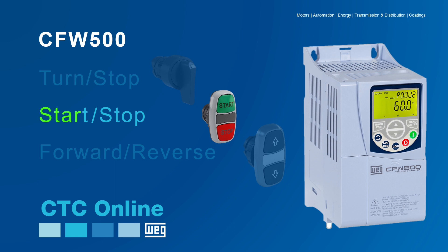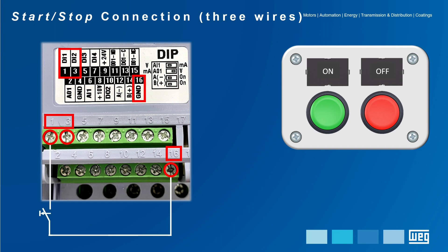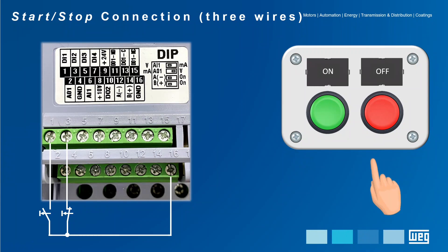The next command is the START STOP with three-wire connections. That setup uses a pulsating button where you can start and stop the motor without the need for an external contact for circuit interlock. In other words, you need two control signals connected to the digital inputs. In this example, digital input DI1 terminals 1 and 16 will receive the normally open contact signal from the ON button for the START function. Remember that the signals will be executed by PULSE commands on the PUSH buttons.